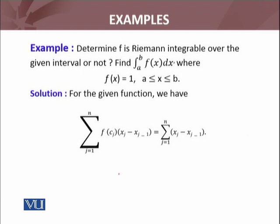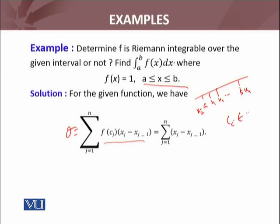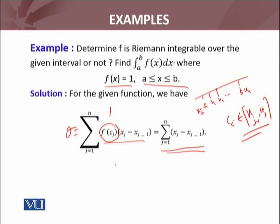For the given function, the Riemann sum is given as follows. We have the interval [a, b] with partition: x0, x1, x2, and so on up to xn = b. The Riemann sum sigma equals the summation of f(cj) times (xj - xj-1), where cj is any real number between xj-1 and xj. Since f(x) = 1, f(cj) = 1, so the sum becomes summation of (xj - xj-1).